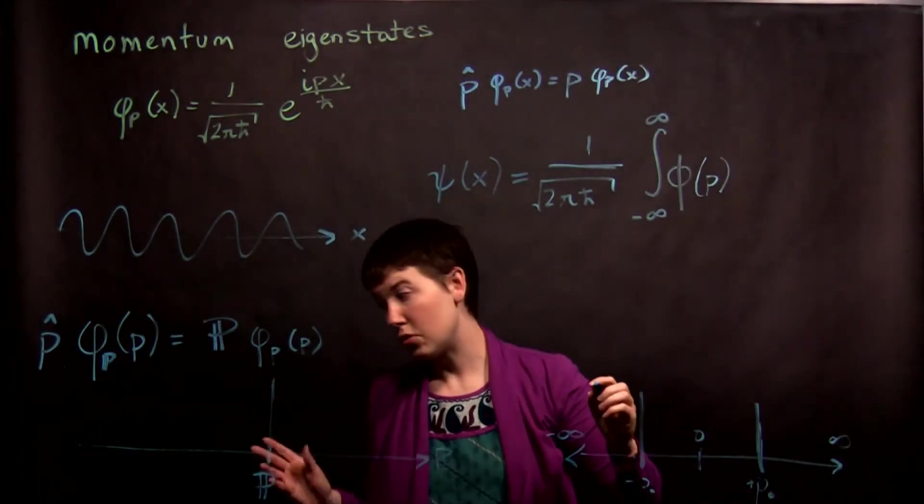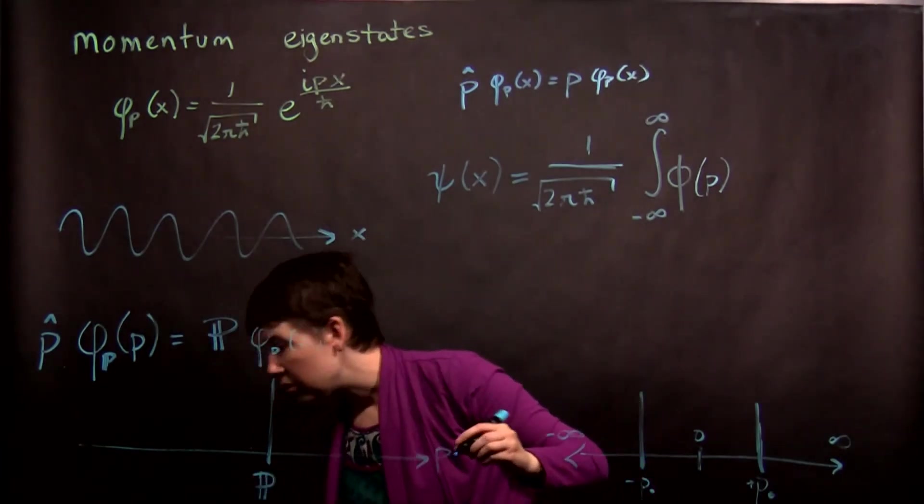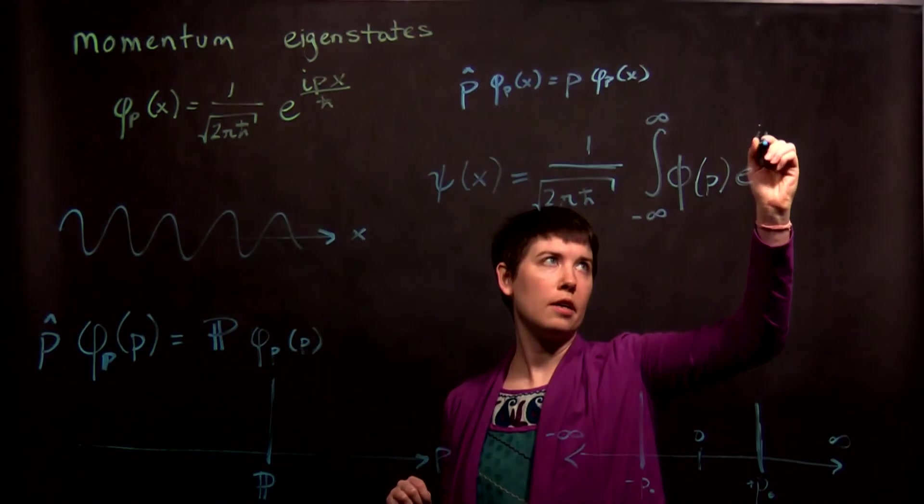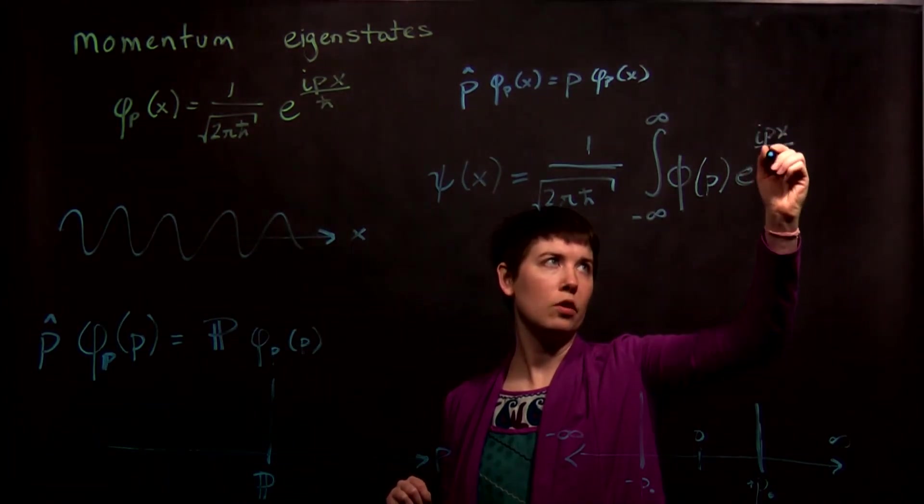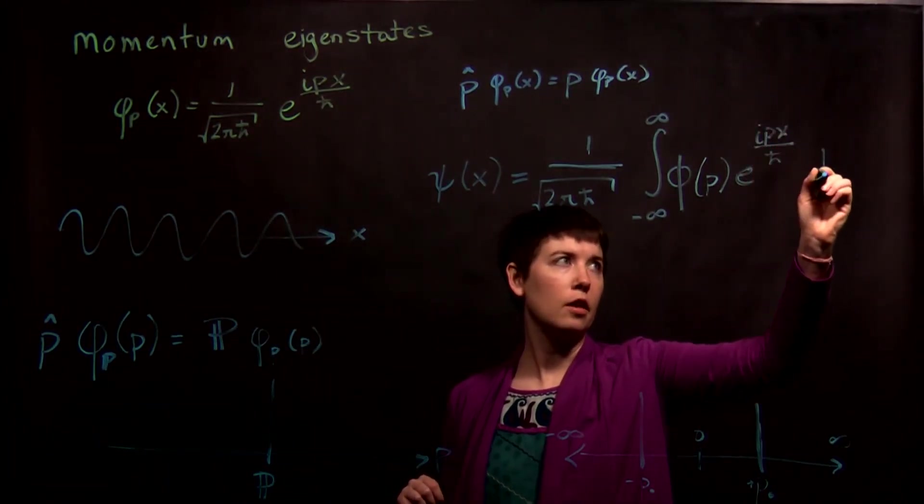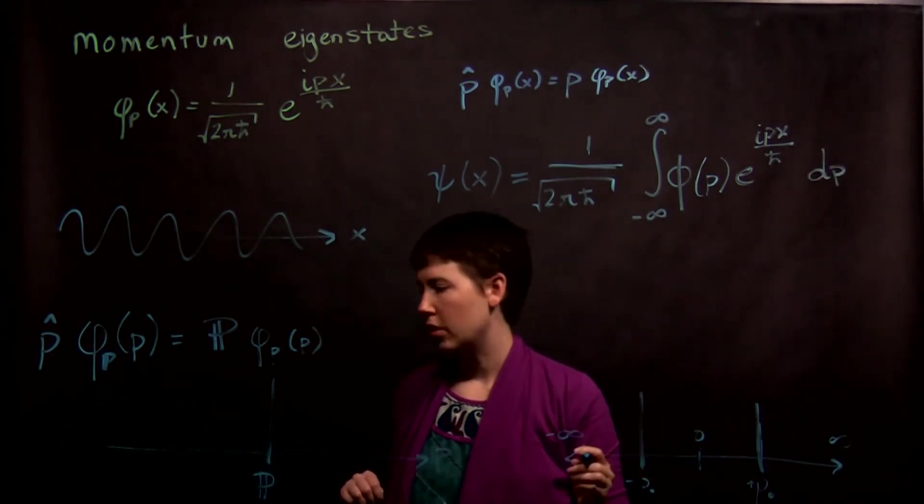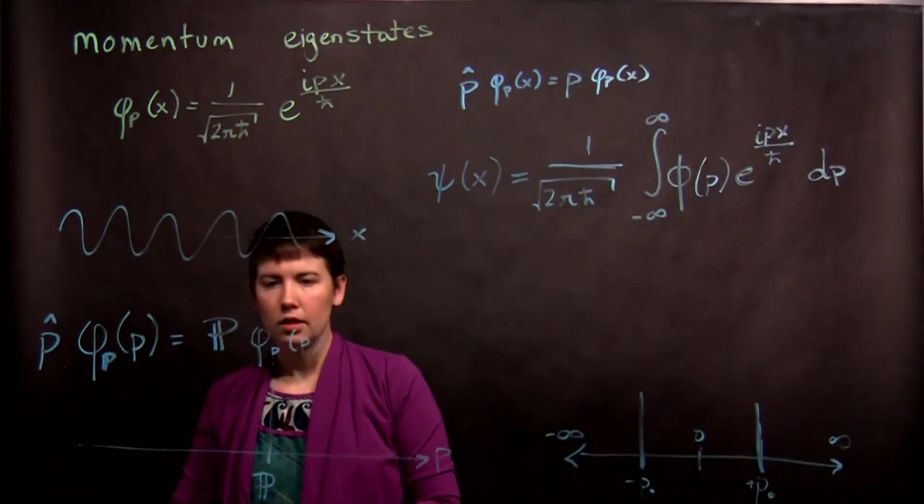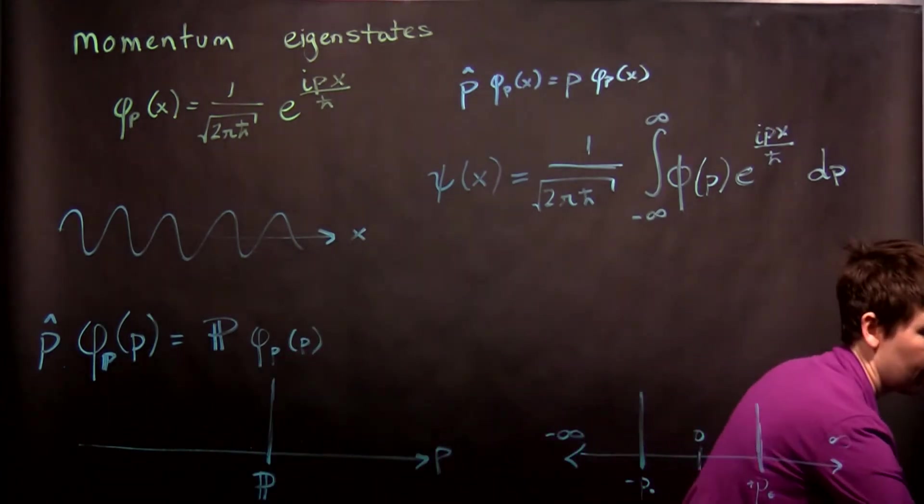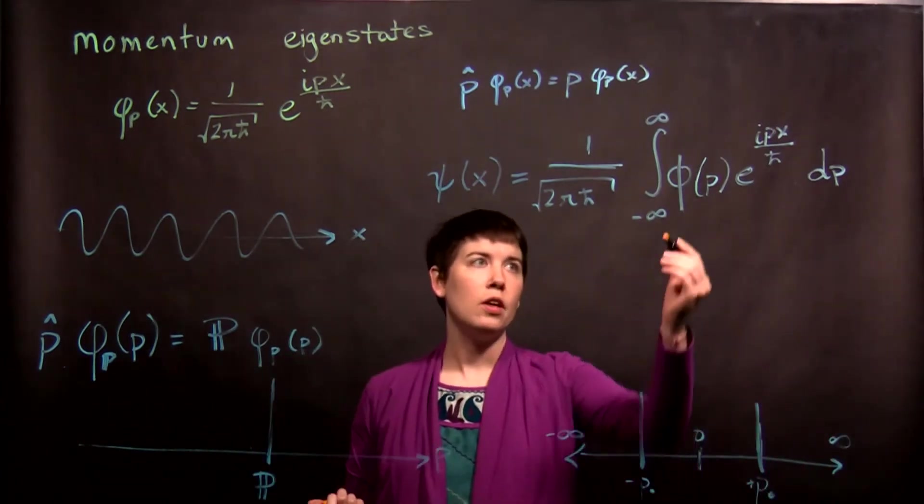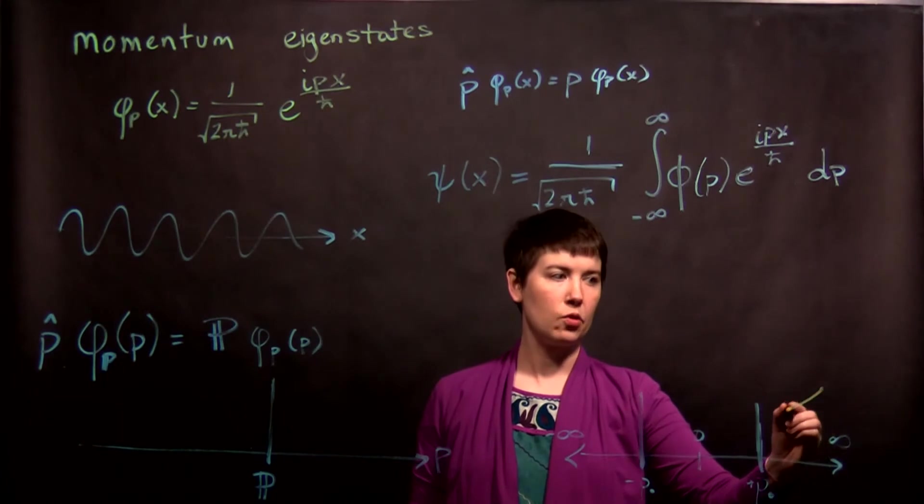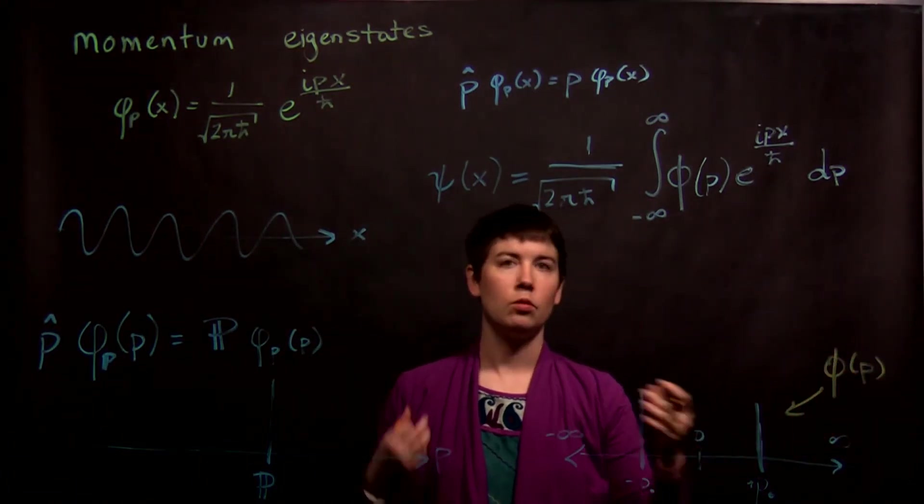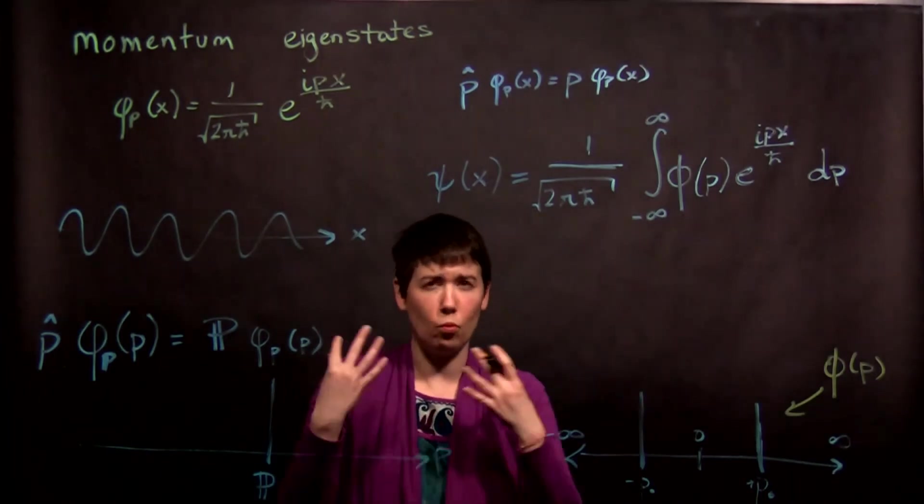You still have e to the i px over h bar, and now dp. So what this is doing is saying, okay, if I have a function of momentum, right? So like this could have been that momentum, like the momentum wave function, that we can convert that back to a spatial representation by basically thinking about this.